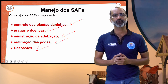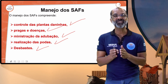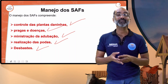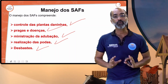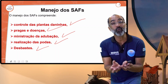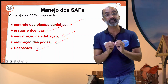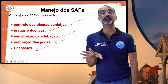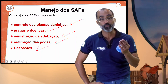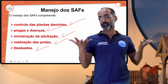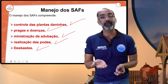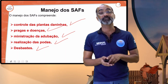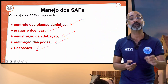A planta daninha tem capacidade de absorver nutrientes e água, é tolerante à estiagem. Por mais que não chova, o mato está ali verdejante. Isso causa uma competitividade, um sequestro de nutrientes do solo que as cultivares vão usar. Além disso, dependendo da erva daninha, ela pode se desenvolver mais do que a cultivar, causando sombreamento que reduz o potencial de desenvolvimento da cultivar.